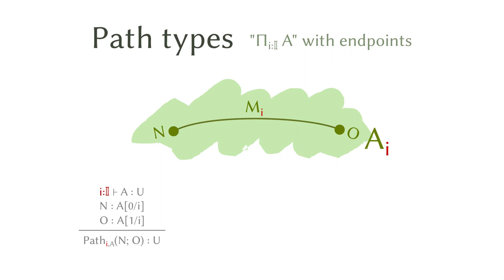So we want a new type to talk about all the paths between N and O. You have a type A indexed by I as elements in the standard interval, with N on the 0 side of A and O on the 1 side of A. Then we say you have a new type — Path — indexed by A, N, and O, and that is a new type in the universe.